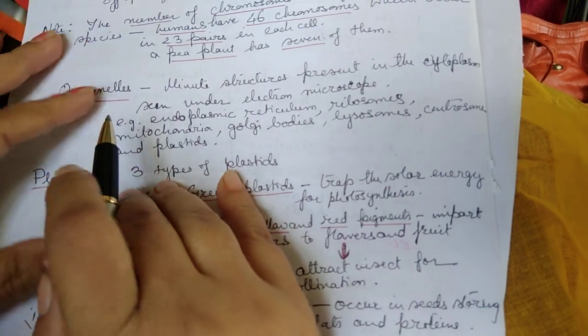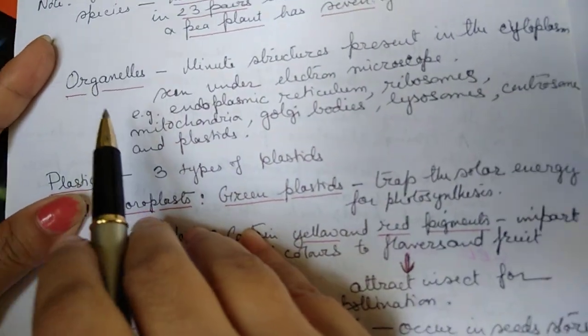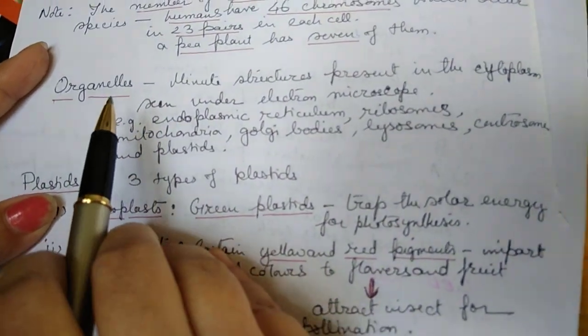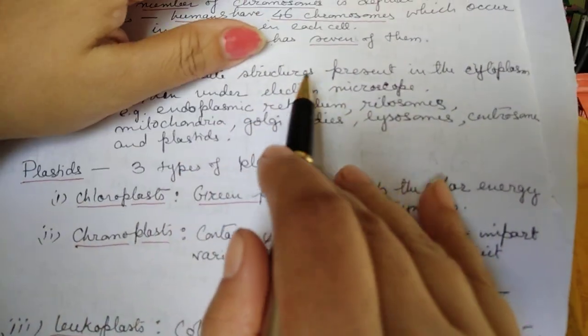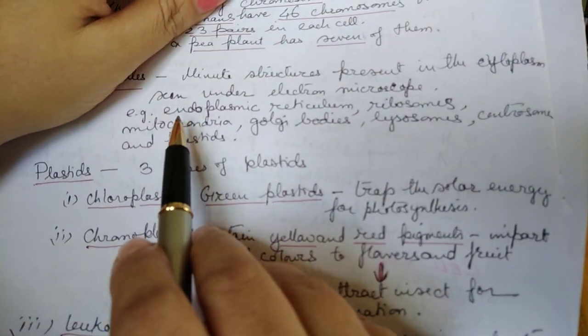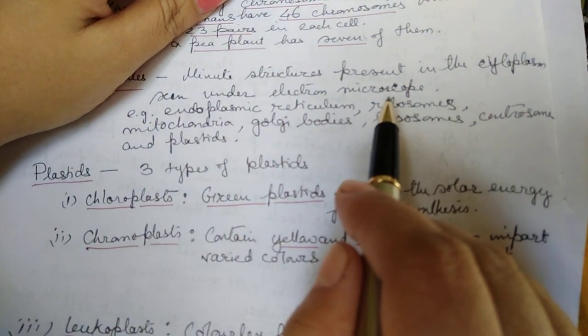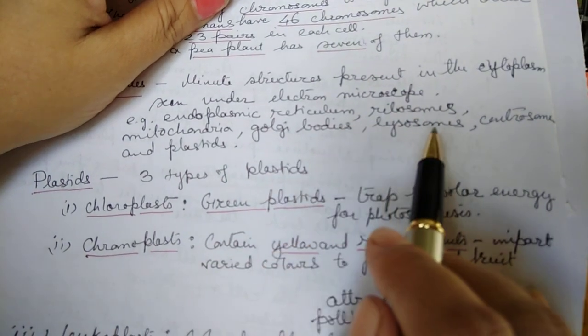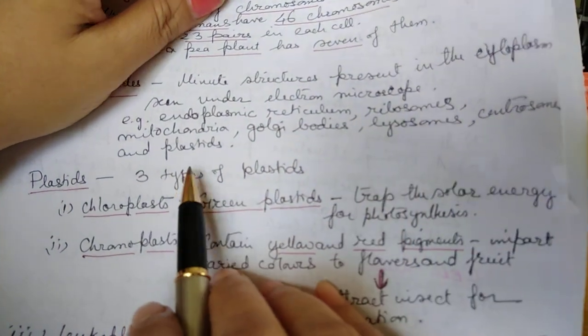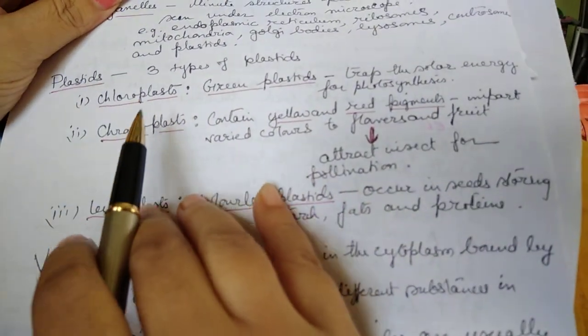Now I told you that in the cytoplasm there are distributed certain organelles. What are organelles? They are minute structures present in the cytoplasm seen under electron microscope, like endoplasmic reticulum, ribosomes, mitochondria, Golgi bodies, lysosomes, centrosome and plastids.